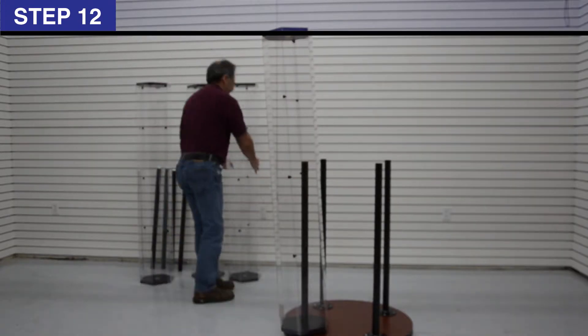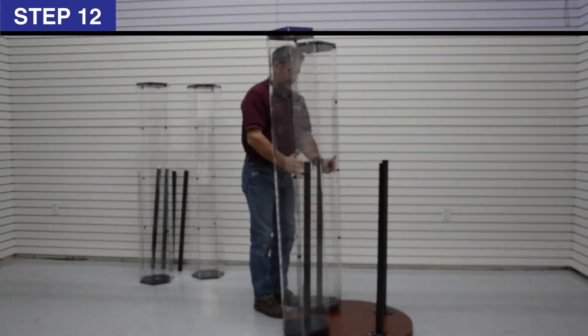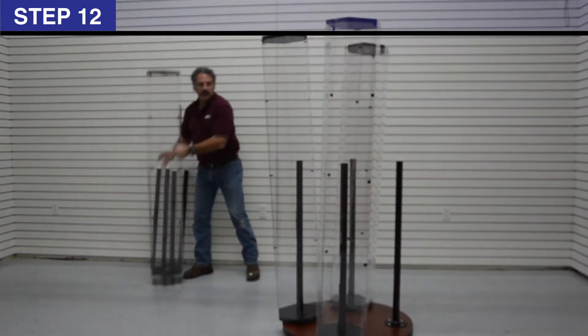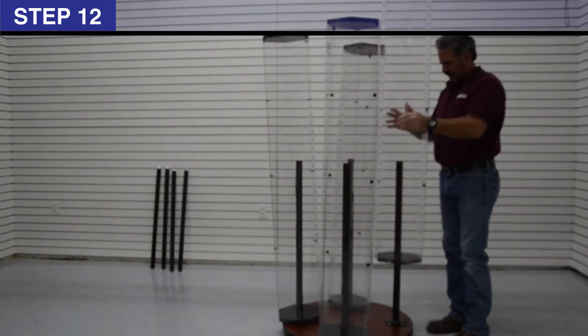Step 12: Slide tower side panel assembly down onto bottom pole assembly. Repeat steps 11 and 12, 3 more times to complete top pole assembly. You may need a step ladder to complete this step.